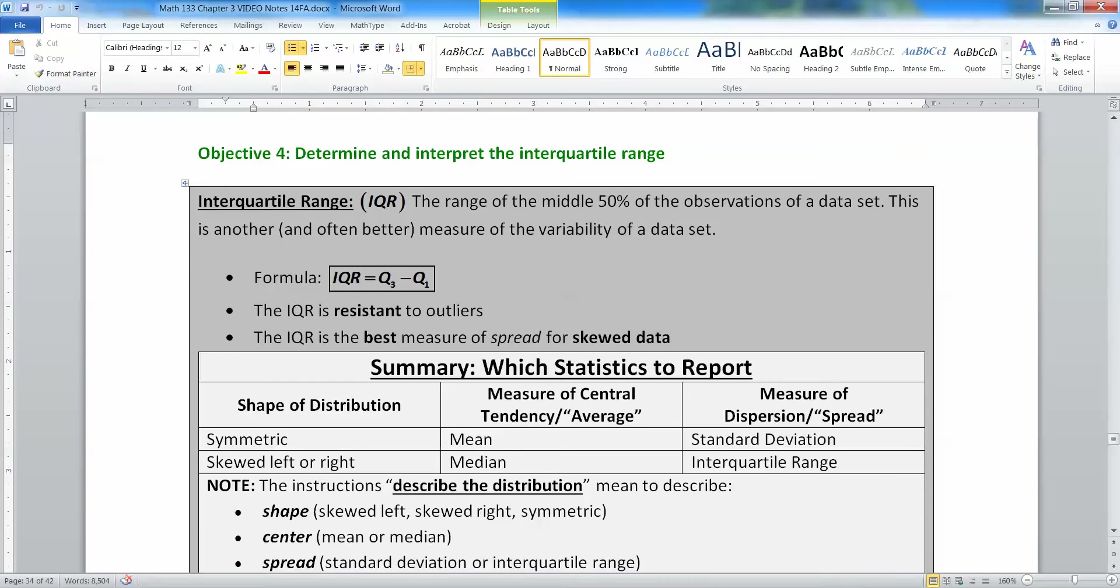Because Q3 is the 75th percentile and Q1 is the 25th percentile. Then approximately 50% of the data lies between those two values. So when you find the range, you're finding out how spread out that 50%, middle 50% of your data set is. Now that IQR is resistant to outliers because it's built from quartiles and the quartiles are resistant, just like the median is resistant to outliers. That means that the IQR is the best measure of spread for skewed data.